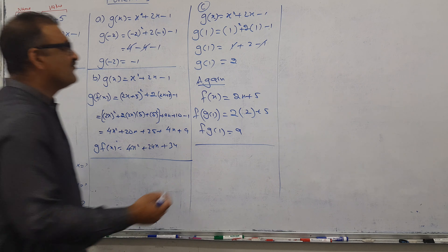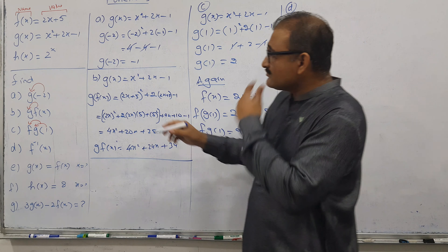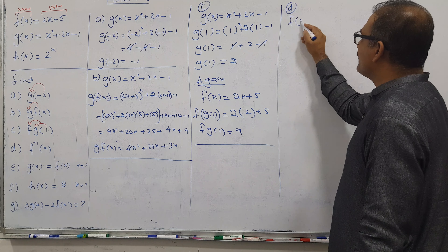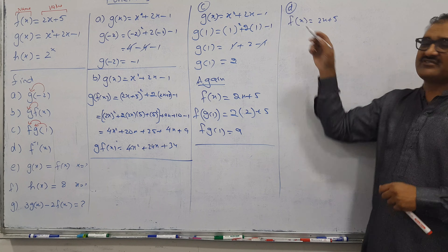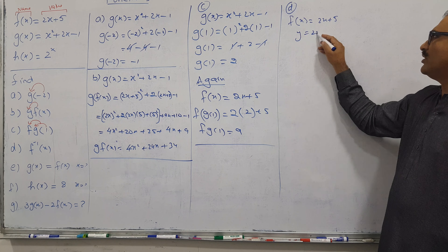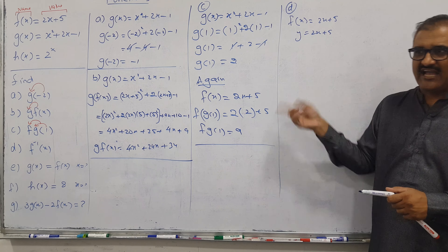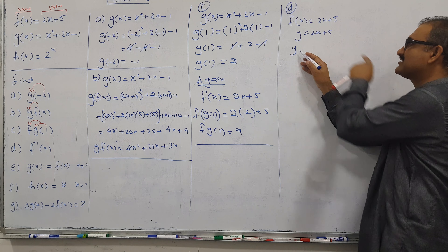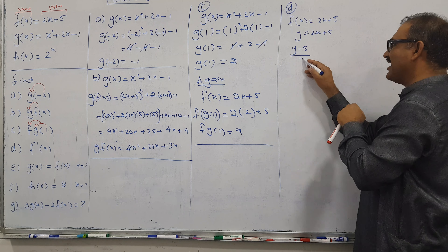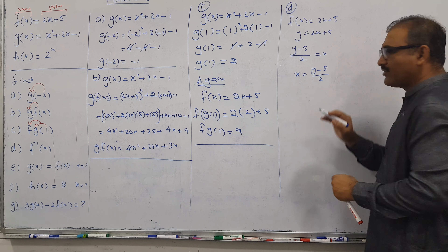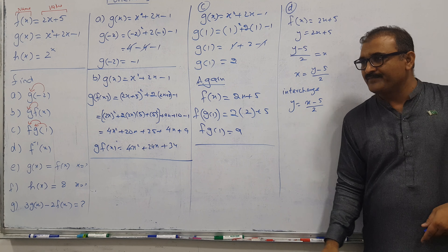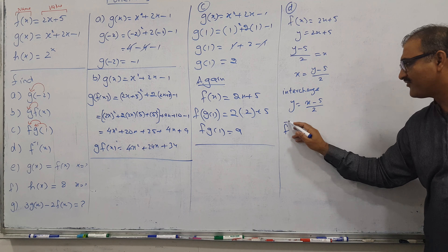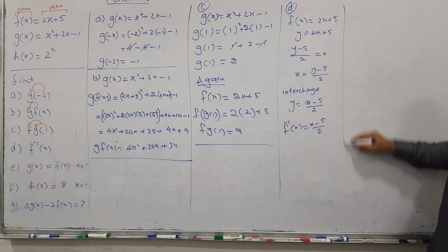Part D: Finding the inverse function. There are four steps. Step 1: Copy the function without any change, then remove the function name and replace it with Y. Step 2: Make X the subject — move 5 to the other side as minus 5, and divide by 2, giving X equals (Y minus 5) over 2. Step 3: Interchange variables — X becomes Y and Y becomes X. Step 4: Replace Y with F inverse of X. That is the answer for Part D.